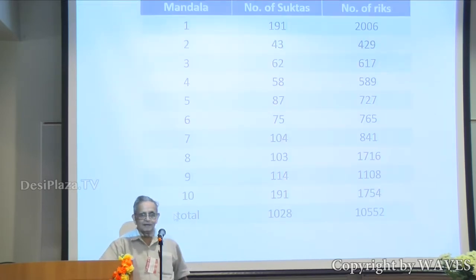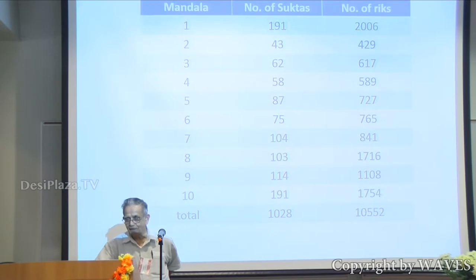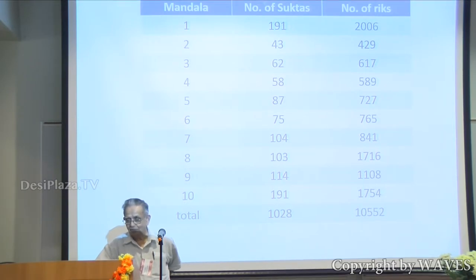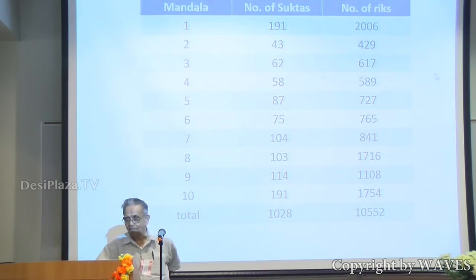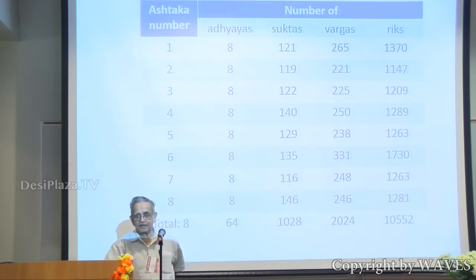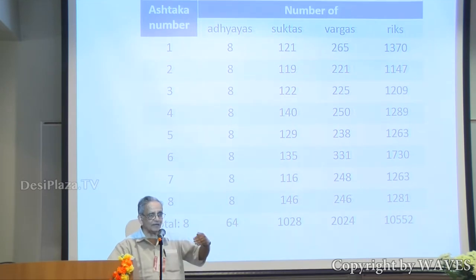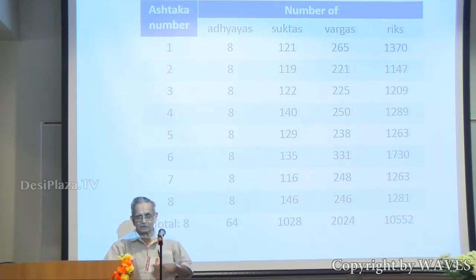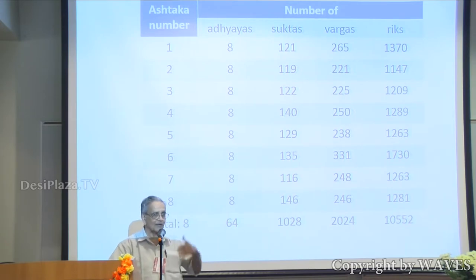That's simply a representation of all the mandalas and the number of suktas and the number of rigs in each mandala. Pay attention to that — there is 191 there, and 191 here: first mandala and tenth mandala. The Rigveda is also classified into ashtakas and argyayas, but it is the same suktas in the same order, simply classified differently. There is no difference between the suktas in this grouping or the other grouping, except in naming.